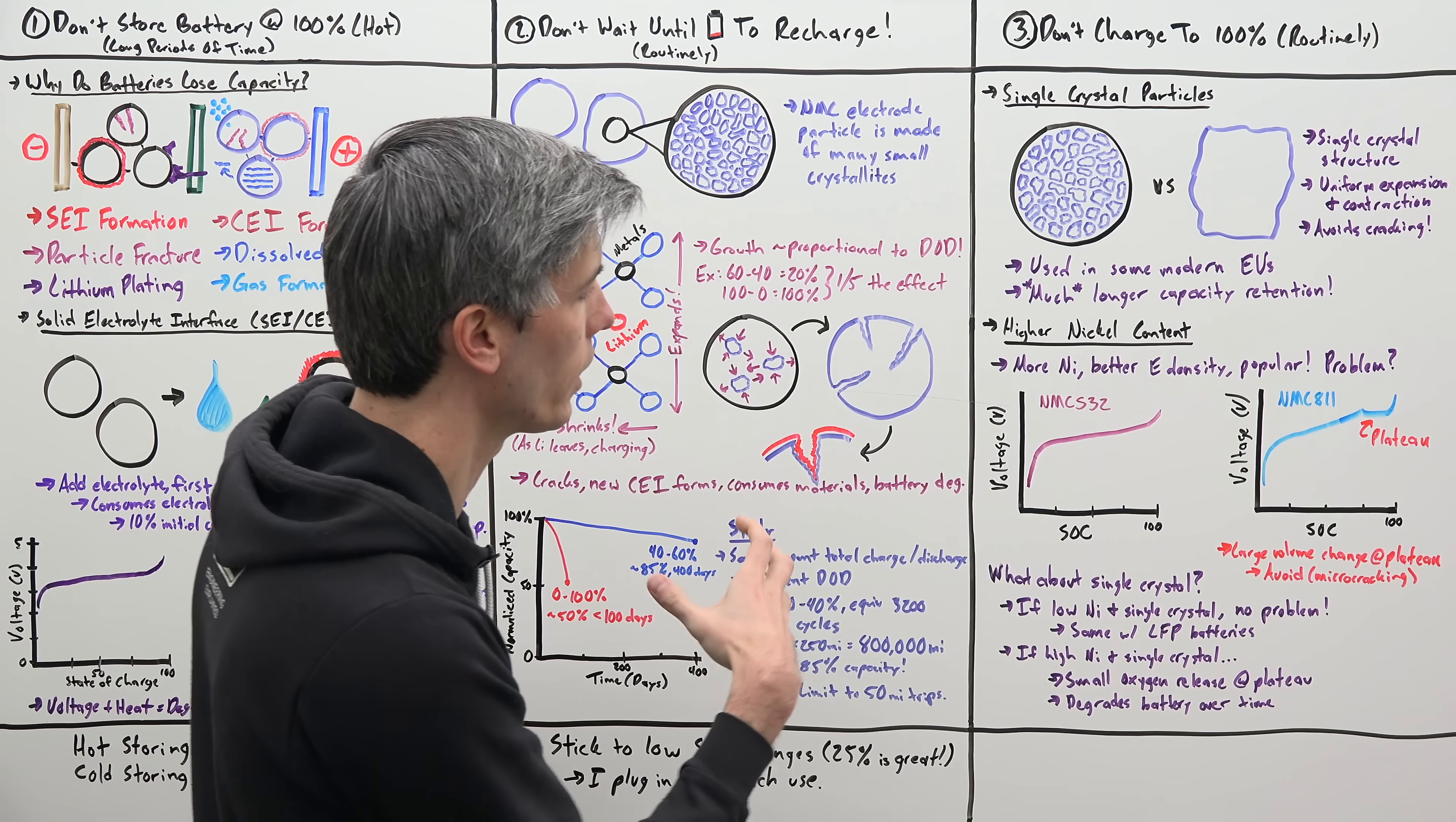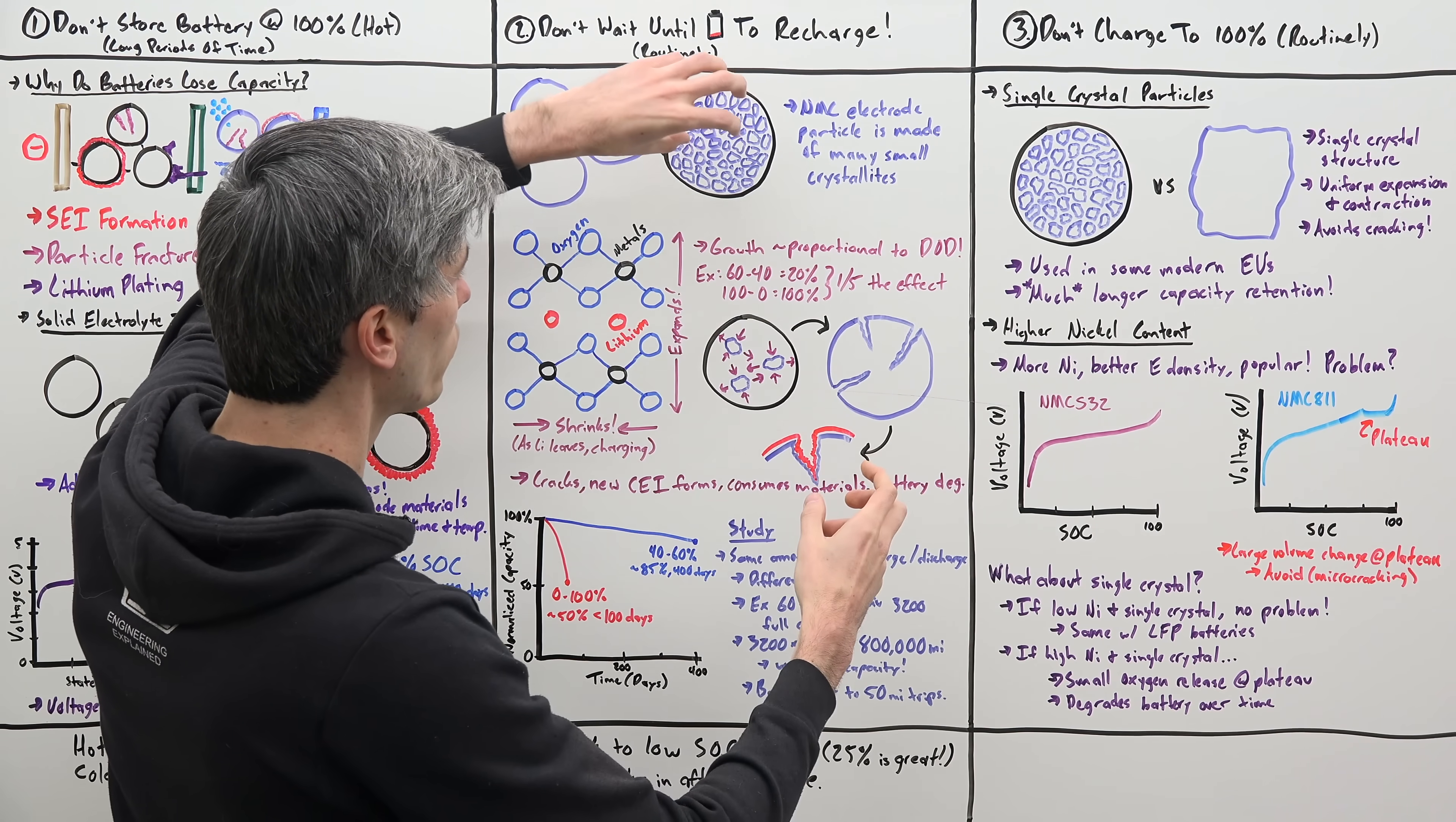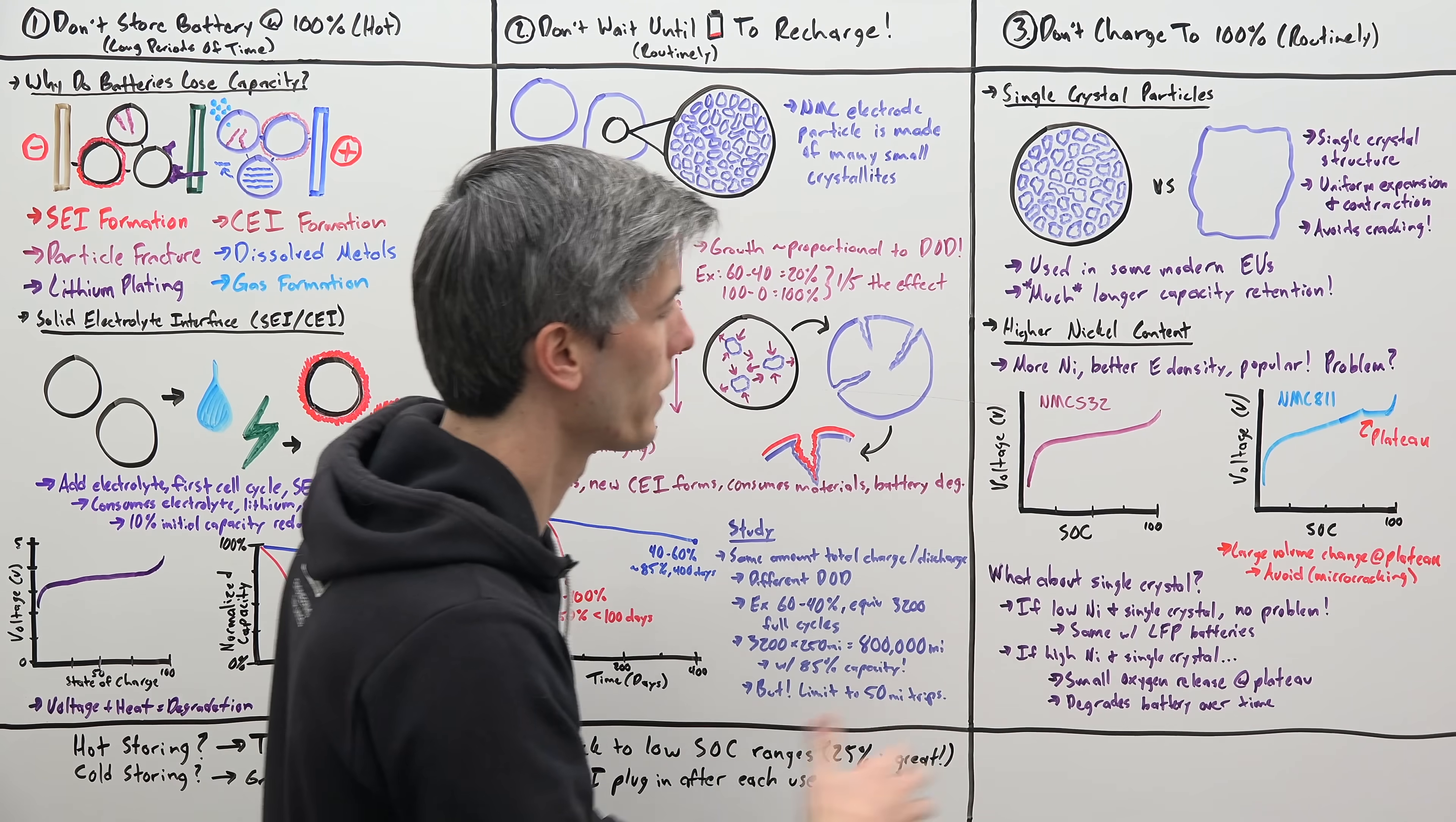Well this plateau is associated with a large volumetric change. So you want to avoid that, especially if you're using these many small crystallites as the structure for that cathode. So you avoid that region, you help avoid that micro-cracking.